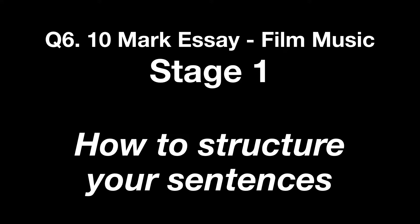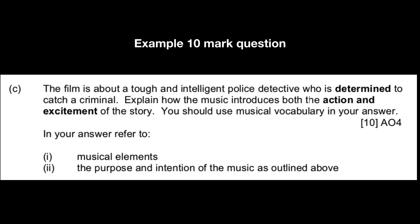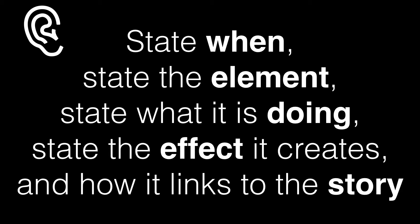This lesson is all about how to structure your sentences. First, you need to state when something is happening and which element it is — so that means harmony, melody, tempo, pitch, and so on. Then state what the element is doing, using your keywords. Then state the effect or mood it creates and how this links to the story. Normally in the exam you'd use your ear, but right now we're going to use our imagination. These are the boxes in summary, and the brain represents using your imagination.